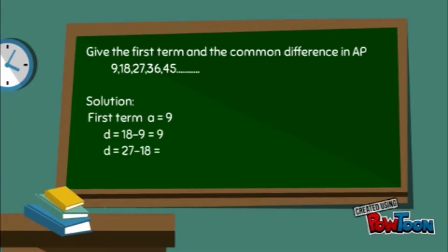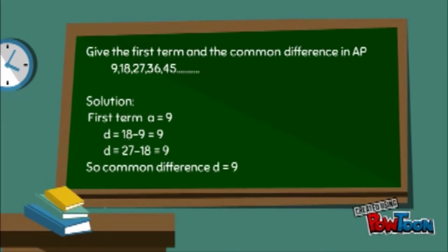To calculate the common difference, d is equal to second term 18 minus first term 9, which is equal to 9. D is equal to third term 27 minus second term 18, which is equal to 9. So, common difference d is 9.